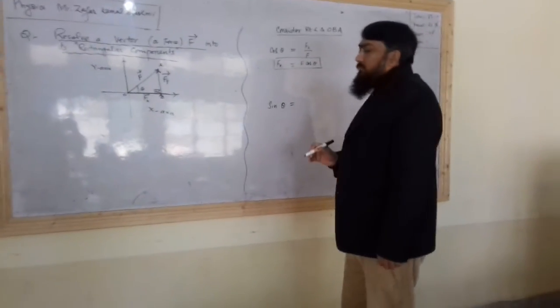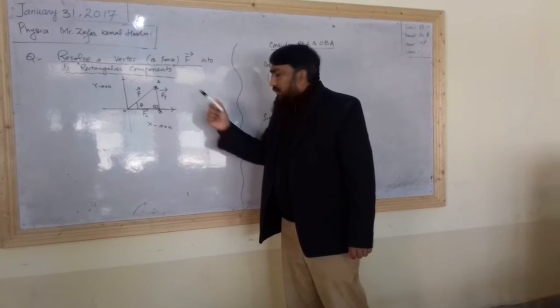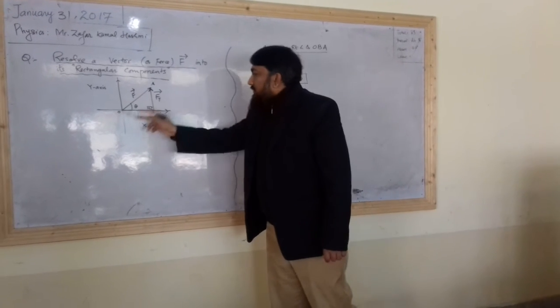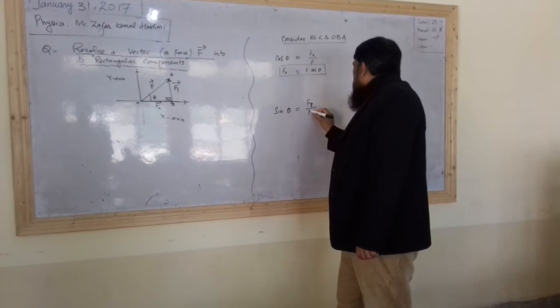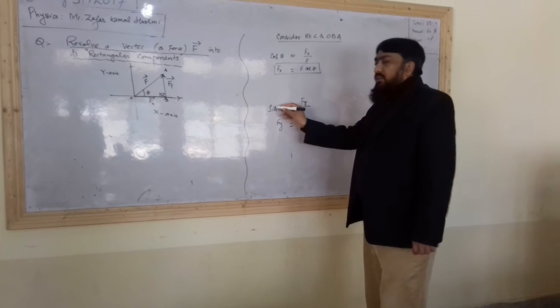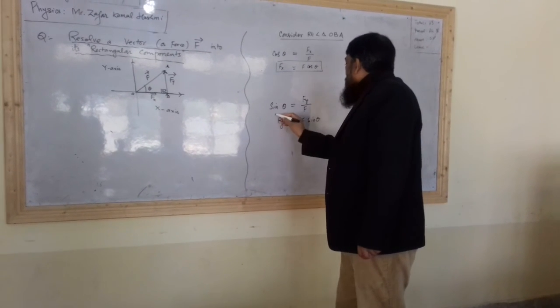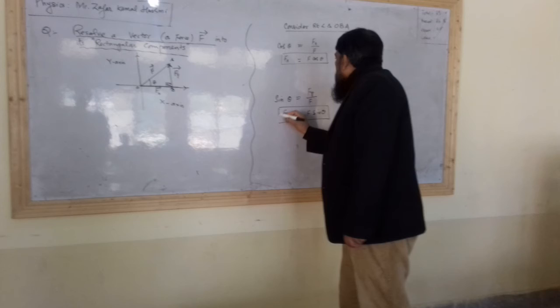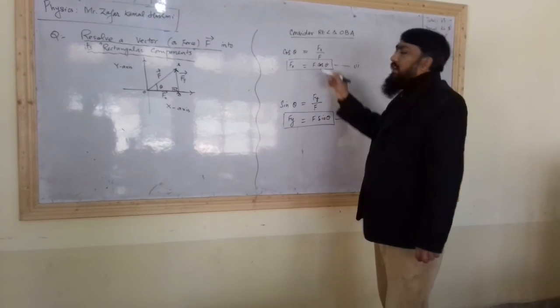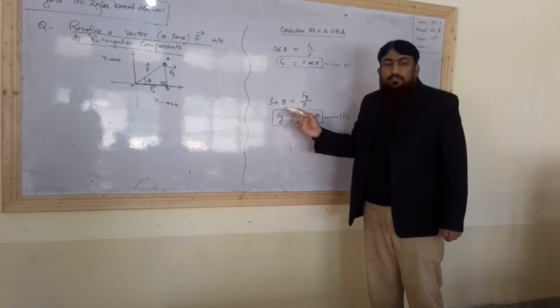And sin theta is equal to, some people have, perpendicular is perpendicular and perpendicular is Fy. Very good. Fy and hypotenuse is F, OA and F. So Fy is equal to F. This is divided here, it will be multiplied, so F sin theta. So you can write here, this is one and this is two, and they give you the magnitude of X component of F and Y component of F.